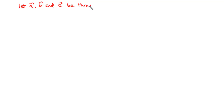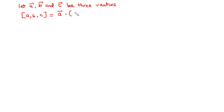Now, let A, B, and C be three vectors. The scalar triple product of these three vectors, which is written as A, B, C in a rectangular bracket, is giving us the dot product of one of the vectors with the cross product of the two remaining vectors. The scalar triple product is obtained from the fact that this expression gives a scalar quantity.